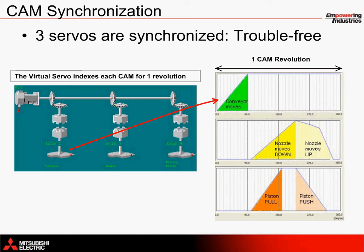The nozzle axis, axis number 3, uses a reciprocal cam profile to move the nozzle down into the carton and then back up again. This process begins shortly after the conveyor has finished its index. The filling piston axis, axis number 4, also uses a reciprocal cam to pull the piston, drawing fluid into its chamber, and then push the fluid into the carton at the same time the nozzle axis moves up.